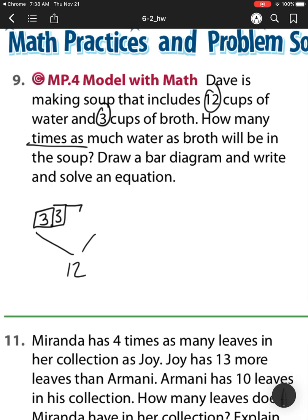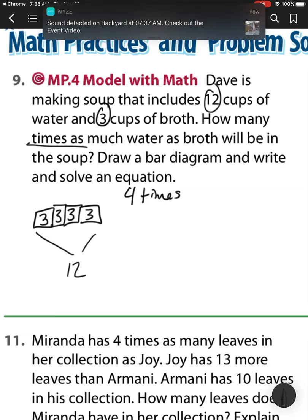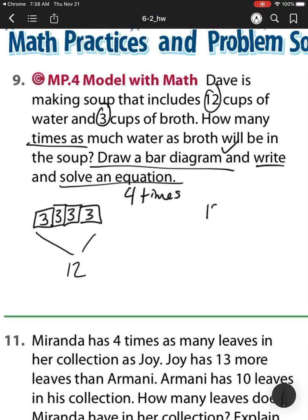So I'm looking for how many times. So that bar diagram is I start out with 3, and what number do I need to get it to? Well, I need to get it to 12. So that would be 3, 6, 9, 12. So that would be four times.